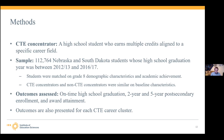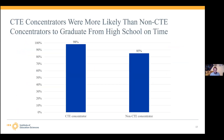CTE concentrators were more likely than non-CTE concentrators to graduate from high school on time, with a difference of 98 versus 85 percent in raw percentages. When we actually did the impact analysis — the statistical analysis including baseline characteristics and all the controls — we found that CTE concentrators were seven percentage points more likely to graduate on time. The raw percentages and the impact analysis number differ because they are two different ways of looking at the data.